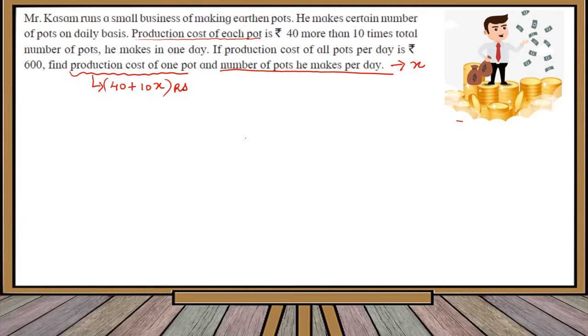Hence, the total production cost is always equal to number of pots times cost of one pot, that is x times (40 + 10x). They have given us the total production cost for one day is ₹600.